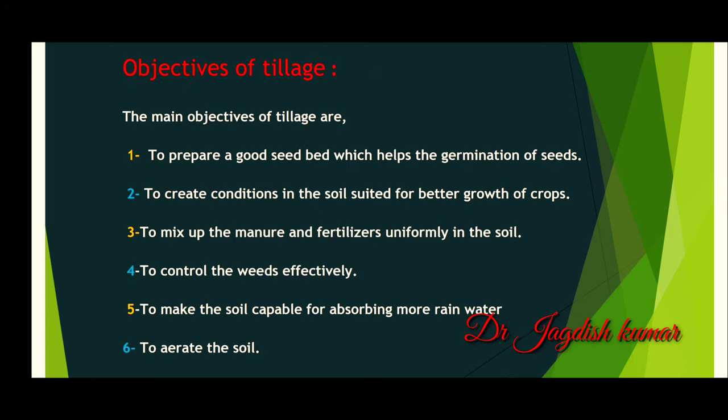Now come to the objectives of tillage. The main objectives of tillage are: 1. To prepare a good seed bed which helps the germination of seeds. 2. To create conditions in the soil suited for better growth of crop. 3. To mix up the manure and fertilizer uniformly in the soil to control the weeds effectively. 5. To make the soil capable for absorbing more rainwater.